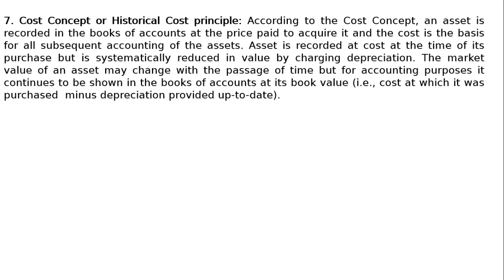The seventh principle is the Cost Concept or Historical Cost Principle. According to this concept, an asset is recorded in the books of accounts at the price paid to acquire it, and cost is the basis for all subsequent accounting of assets. An asset is recorded at cost at the time of purchase but is systematically reduced in value by charging depreciation. The market value of an asset may change over time, but for accounting purposes it continues to be shown at its book value — that is, cost at which it was purchased minus depreciation provided up to date.